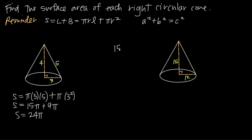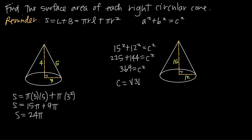So we'll say 15² + 12² = c². 15 squared is 225, and 12 squared is 144, equal to c squared. When we add these two together, we get 369 = c². When we take the square root of both sides, we get c = √369. Now 369 is 9 times 41, so we can say √(9 × 41). The square root of 9 is 3, so c = 3√41, which we can't simplify any further. So the slant height is 3√41.